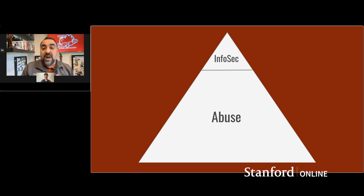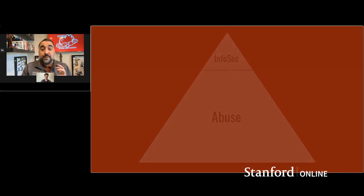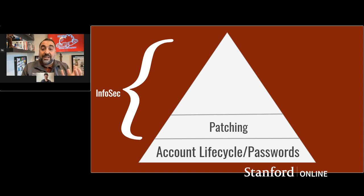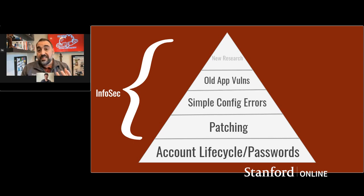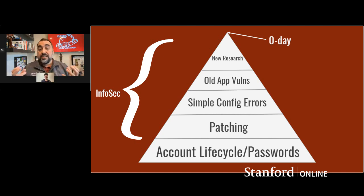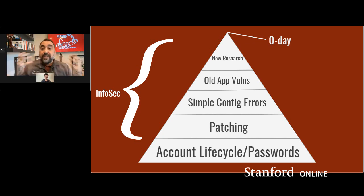Even if you dive into the security field, the things that are really hurting people are the much more prosaic human problems, such as the account lifecycle or the difficulty of patching in large organizations. We spend a huge amount of time thinking about the tip of the pyramid — the really sexy new vulnerabilities — and not enough time in computer science thinking about the everyday things where people make mistakes with their passwords, reuse passwords, or get their phone numbers stolen, which in some cases has much more impact.